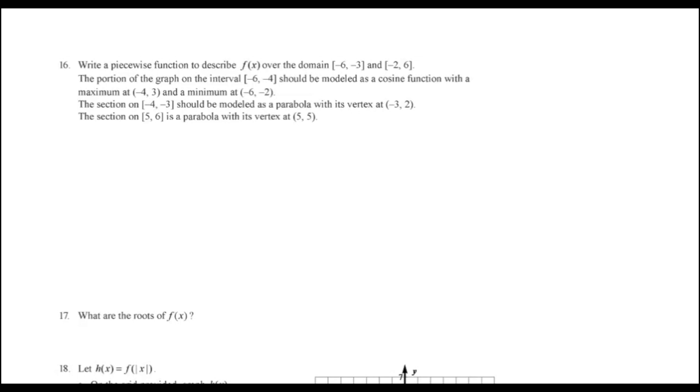Because notice what they have to do for this right here. It tells that one portion of the graph was a cosine. And so what they're doing in number 16 is they're writing all the equations. They're writing the piecewise function for that graph. And so they have to write each equation for every piece. And they're telling them that this first piece or that this one piece from negative 6 to negative 4 is a cosine graph. So they're going to have to remember stuff from the very beginning of the semester, basically, to do that.